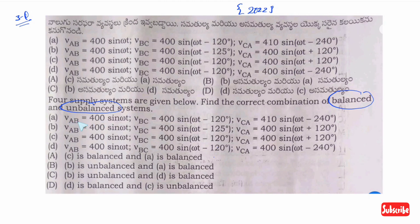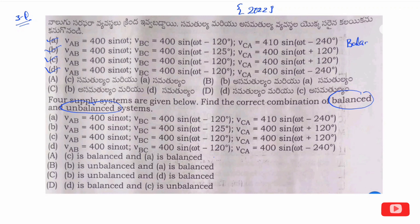We have a sequence of A, B, C. What is the balance system? We have two unbalanced systems. We have options. What is the option? C is balanced and A is balanced. We have a combination of some combinations. What is the option? We have an option here: A, B, C, D. What is balance? What is unbalance?